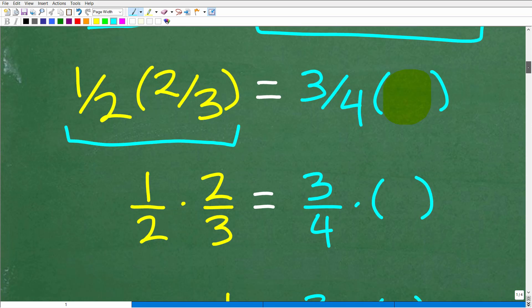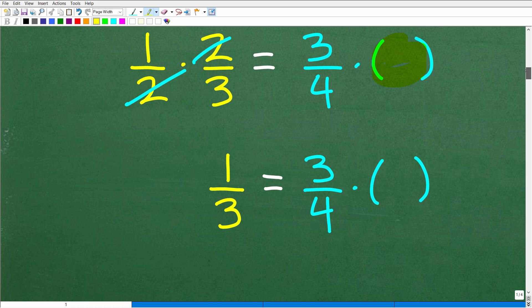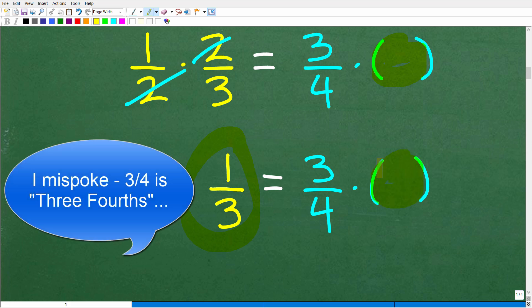All right, so now let's go ahead and get going here. One half times two thirds. So one half of two thirds is this, but one half times two thirds is one half times two thirds. We can write these fractions this way. We can cross cancel these twos, is the same as three fourths times some number. We don't know this, but what we're going to do is clean this problem up. So one half times two thirds is one third. So one third is equal to three fourths times some number.